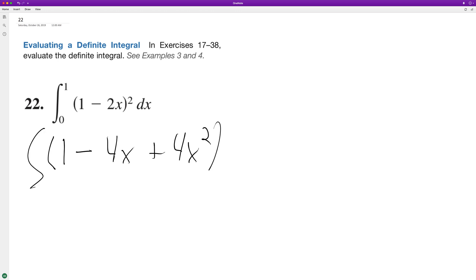So now let's go ahead and integrate this. It's just easier to do it this way. So we end up with x minus 2x squared. You know what, I'm going to go ahead and just do this the correct way.